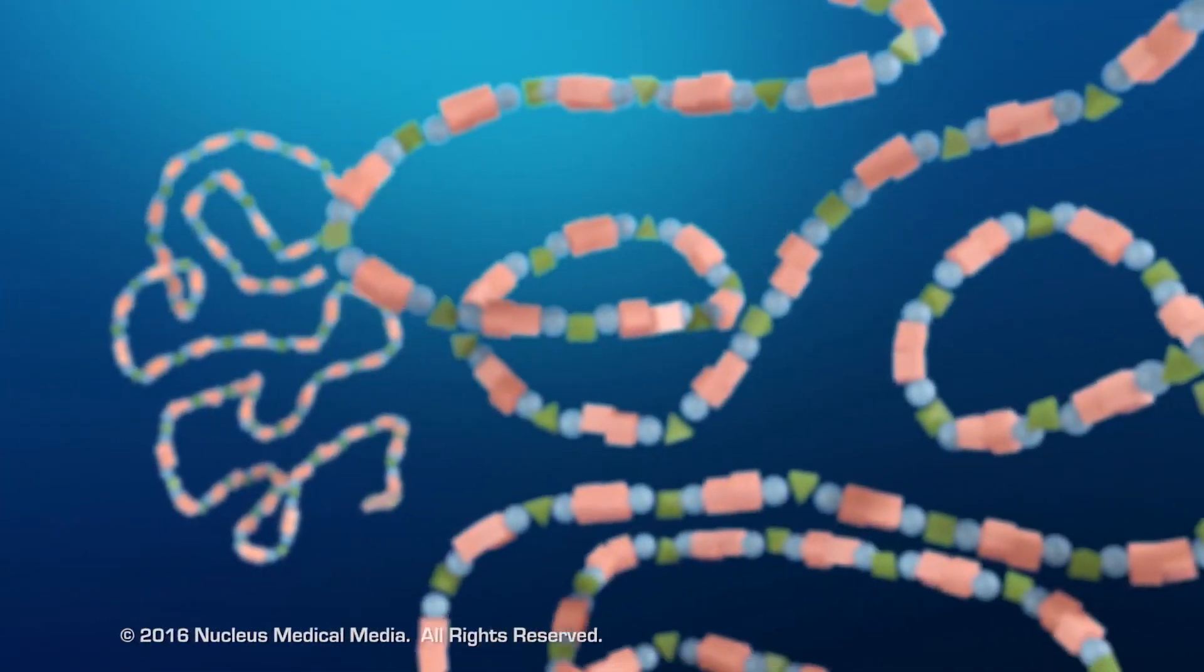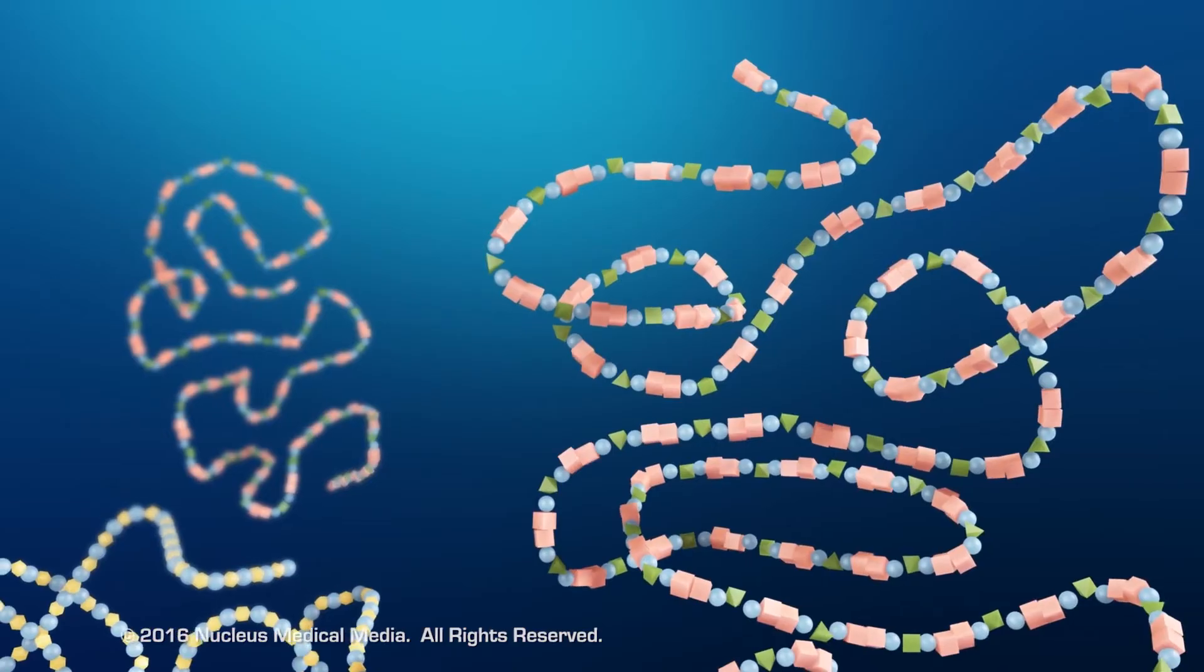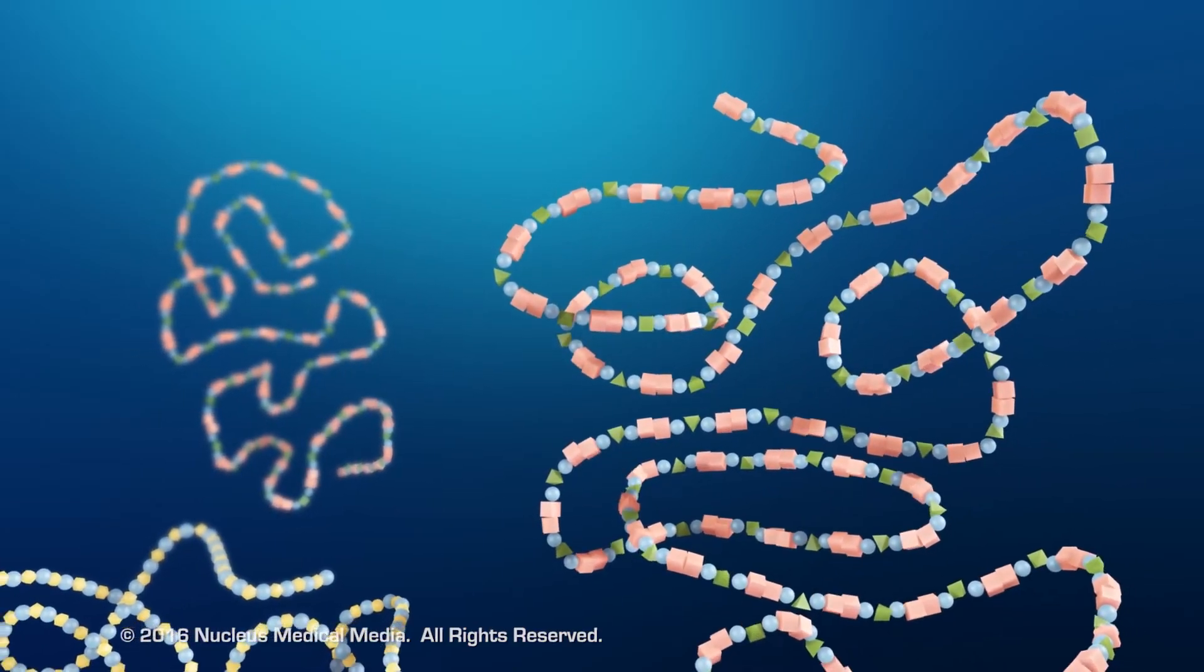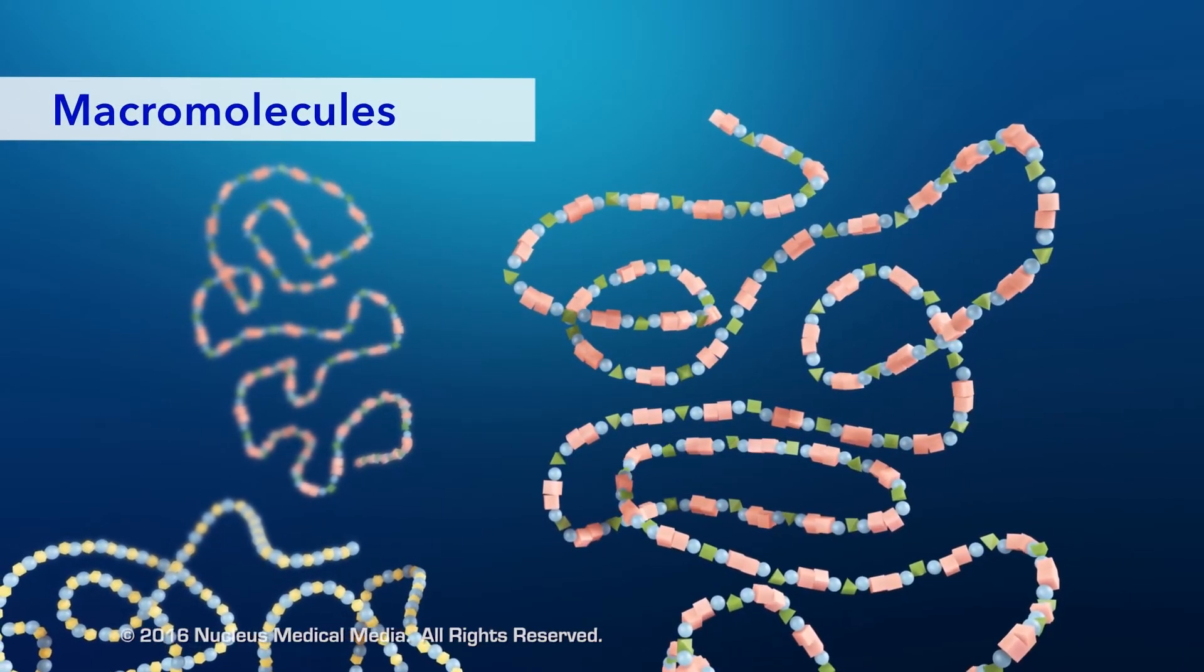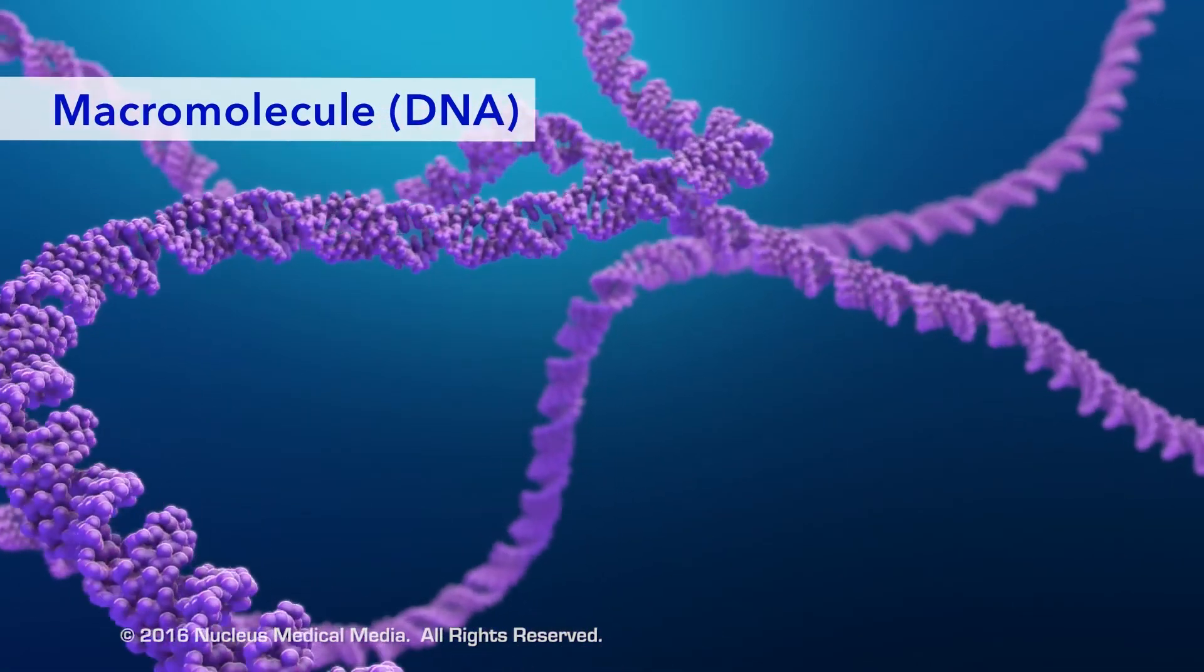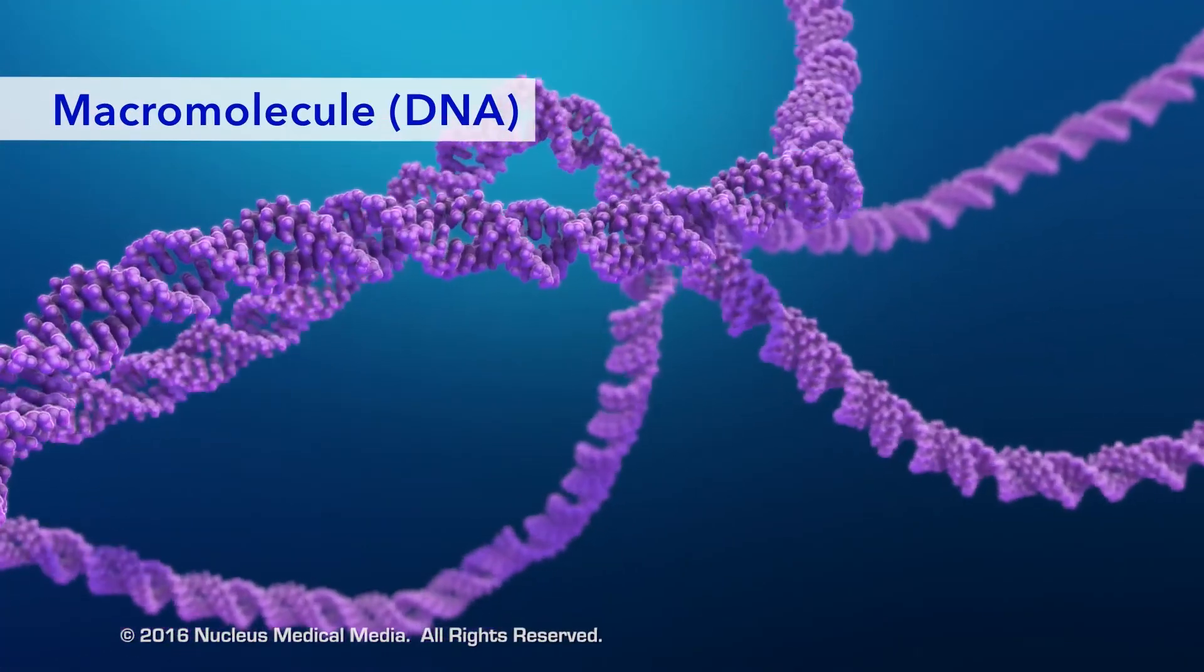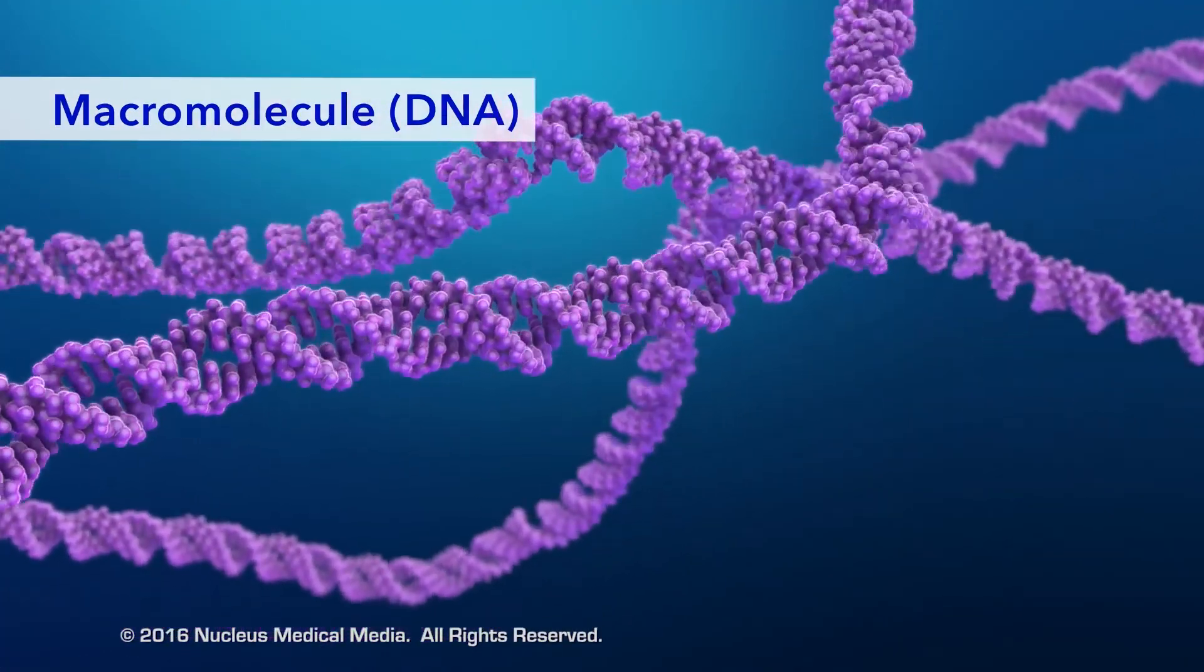Many organic polymers in the cells of living organisms are such large molecules that they're often referred to as macromolecules. DNA is an example of a macromolecule. Macromolecules can contain hundreds or even thousands of atoms.